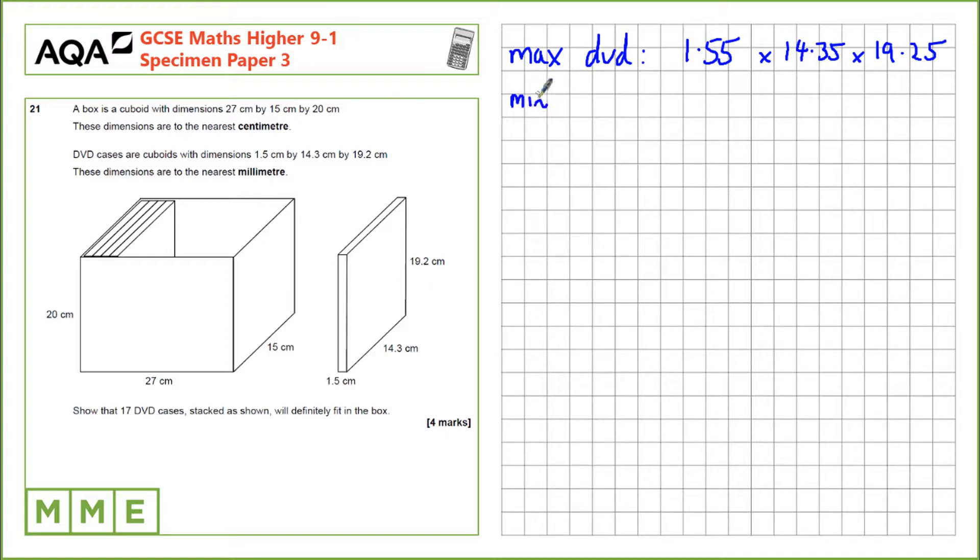Let's do the same but for the minimum size of the box. These are correct to the nearest centimetre, so the lowest 27 could have been if it was rounded to 27 would be 26.5. The lowest 15 could have been would be 14.5, and the lowest for 20 would have been 19.5.